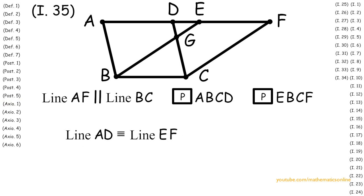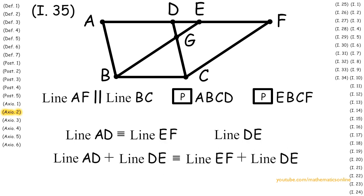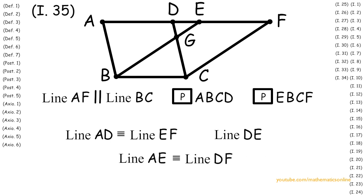Now with this statement and line DE, we apply Axiom 2 to attain that line AD plus line DE is congruent to line EF plus line DE. And what this turns out to be is that line AE is congruent to line DF.